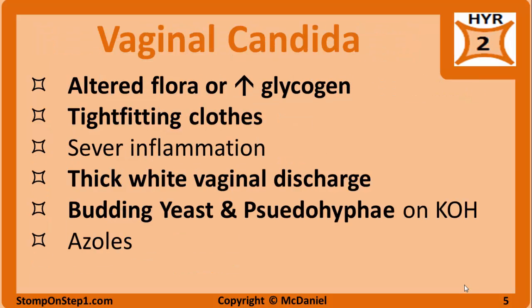If you have been following along with the microbiology section, you will know that I already have a video on fungi and candida. I will cover information specific to vaginal candidiasis here. Vulvovaginal candidiasis, also known as a yeast infection, is an overgrowth of ubiquitous fungi. The most common subtype of candida infections in the vaginal tract is albicans, but you can also see glabrata and tropicalis, especially if it is resistant to treatment. Yeast infections mostly happen in patients with altered flora, including the immunosuppressed, people who recently took antibiotic therapy, or are on corticosteroids.